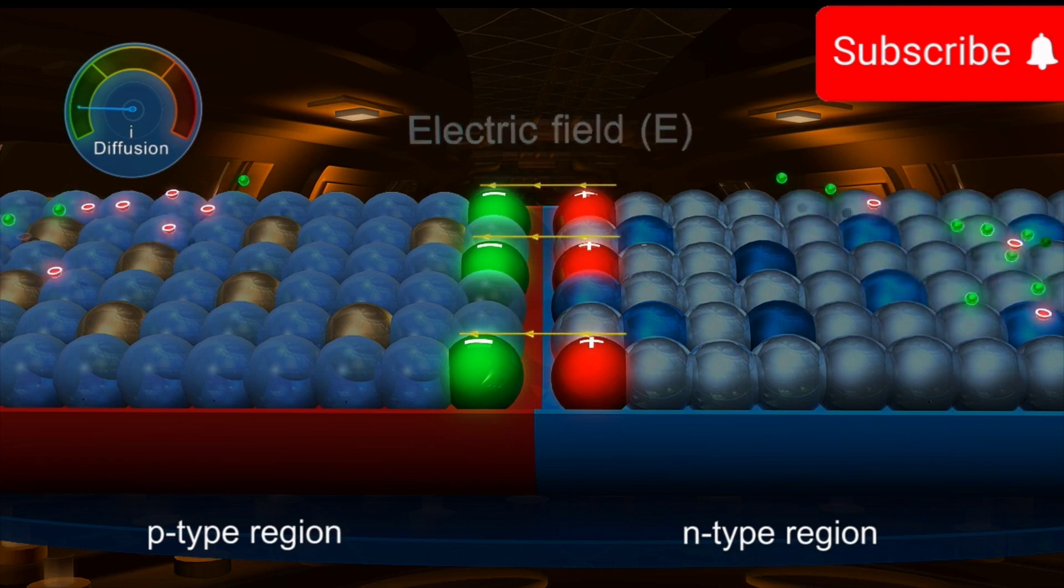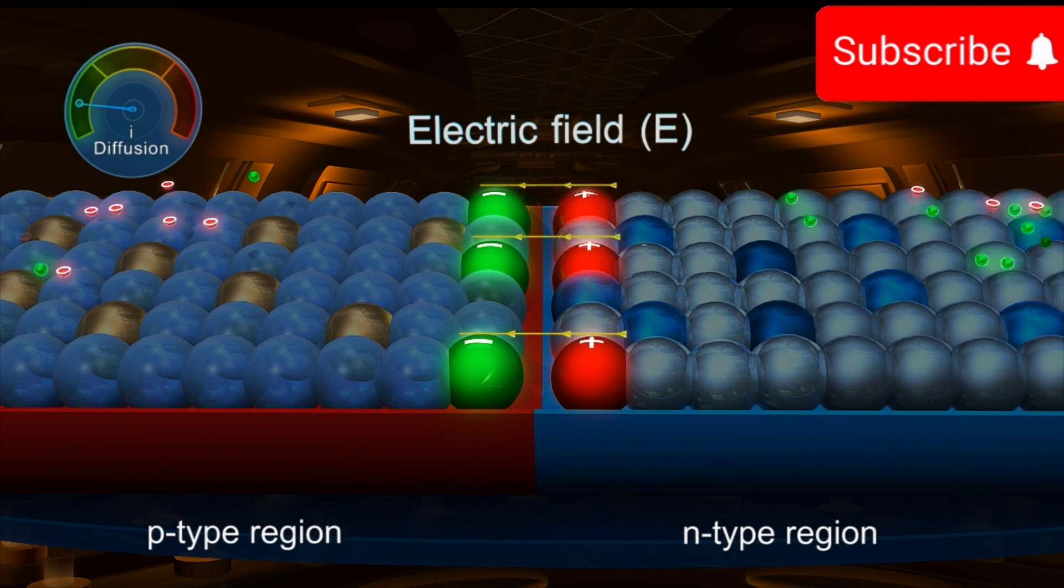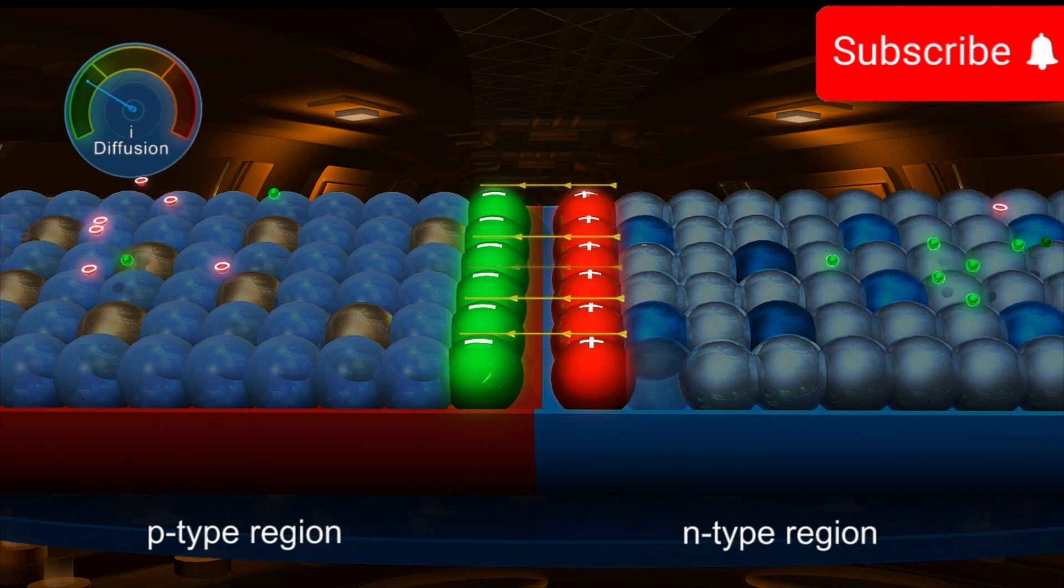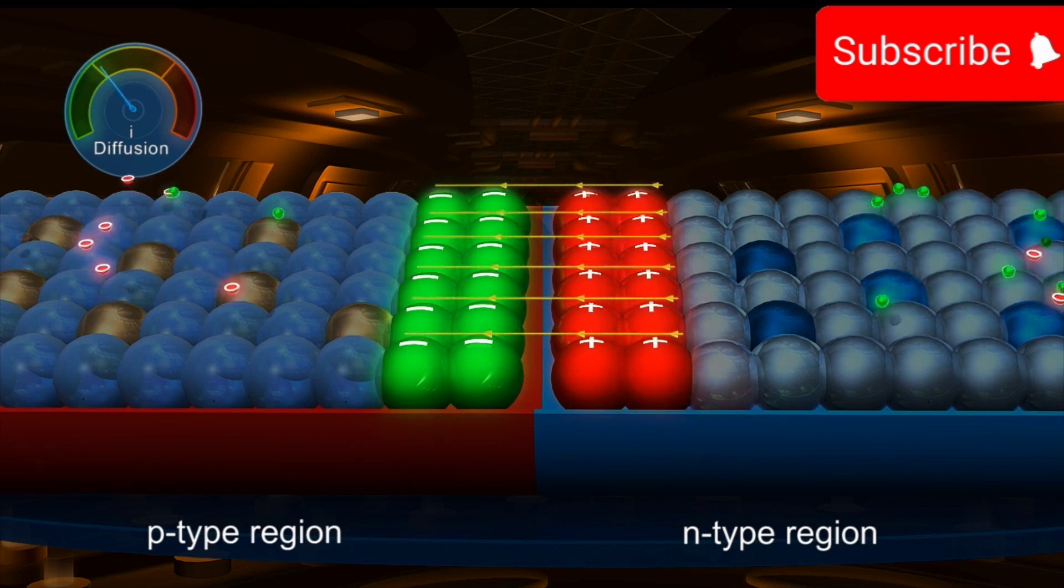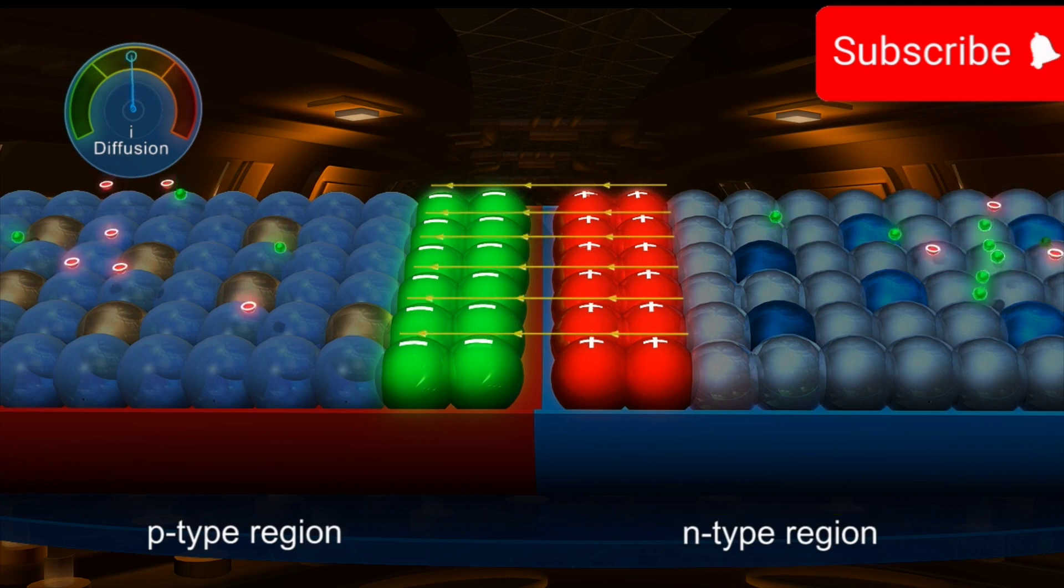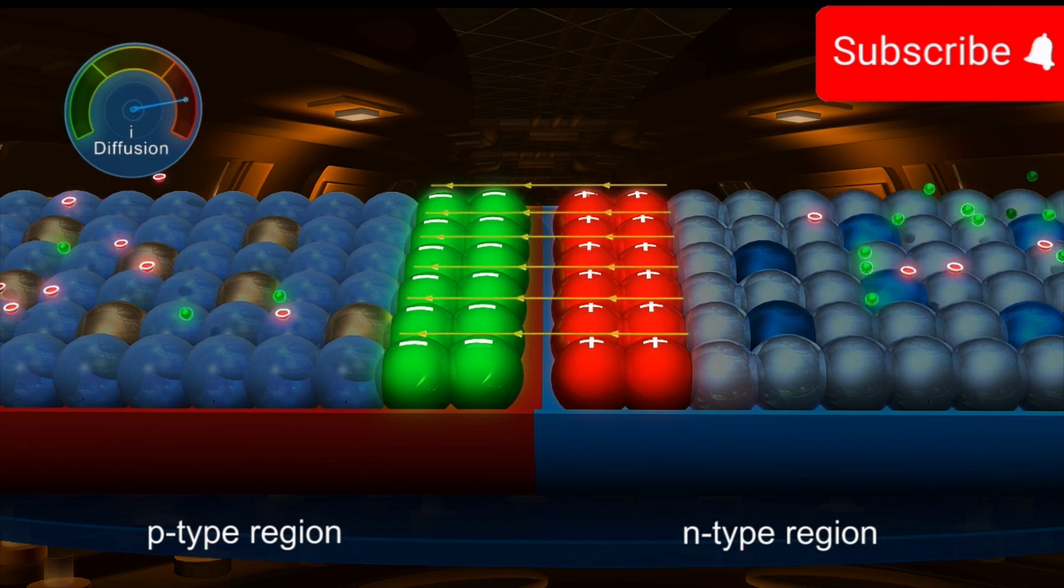As a result, an electric field E is set up near the junction, directed from the positive charge to the negative charge. Further, diffusion of electrons and holes results in accumulation of the positive ions in the N region and the negative ions in the P region, resulting in an increase in the electric field near the junction.